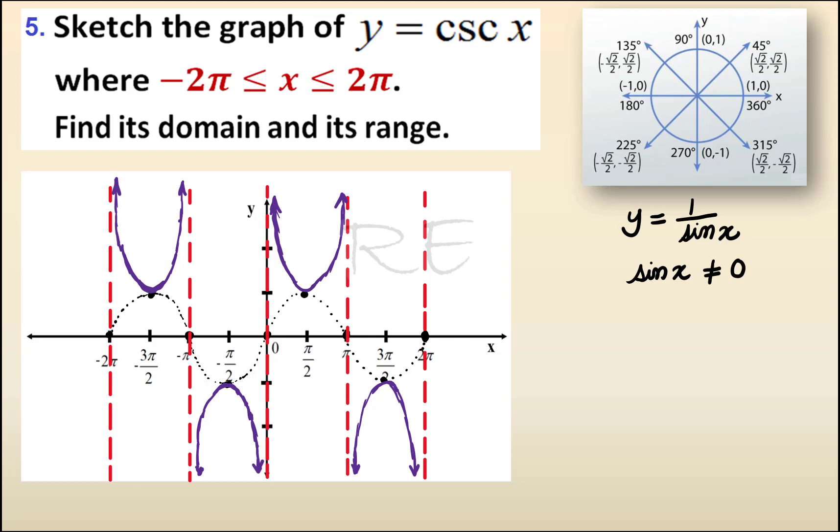Now for the domain, every time we have an asymptote, we cannot have x taking that value. So x cannot be an integer multiple of π.